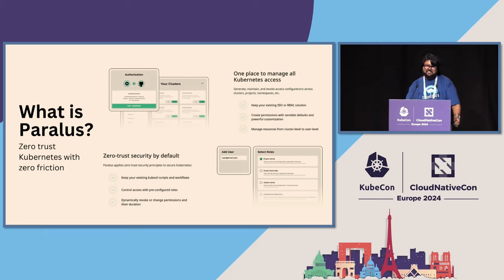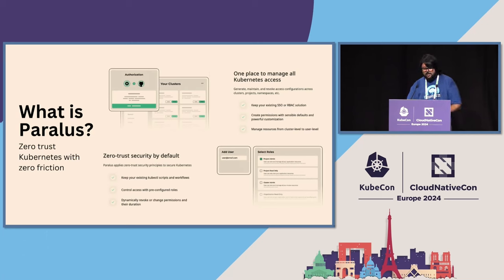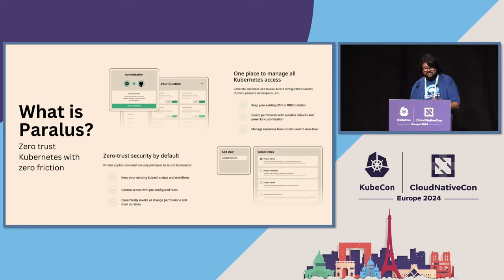Since this is just-in-time, zero trust is embedded in it by default. By default, if anyone tries to access something, they don't have access to it — it all happens just-in-time.